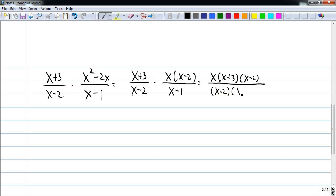To multiply these out, I can really just write the factors next to each other. I have x minus 2 in the numerator and x minus 2 in the denominator, so I can cancel those out. That gives me x times x plus 3 over x minus 1. If you needed to, you could multiply this out further and get x squared plus 3x over x minus 1, but I'm perfectly satisfied with this answer.